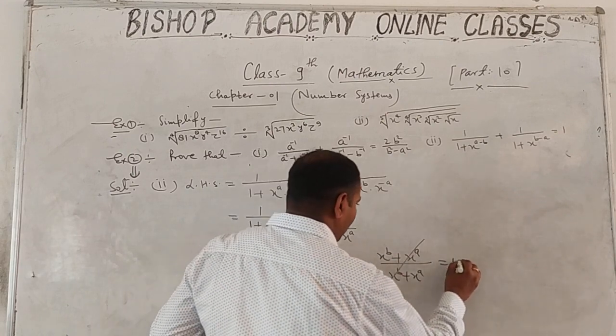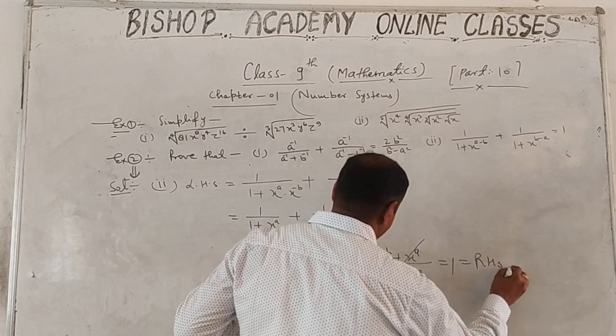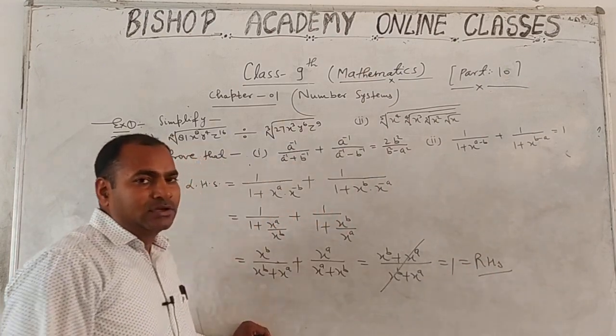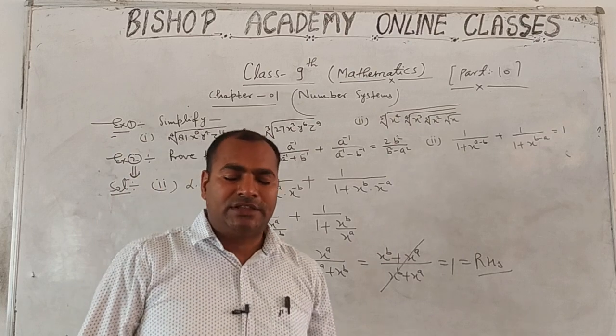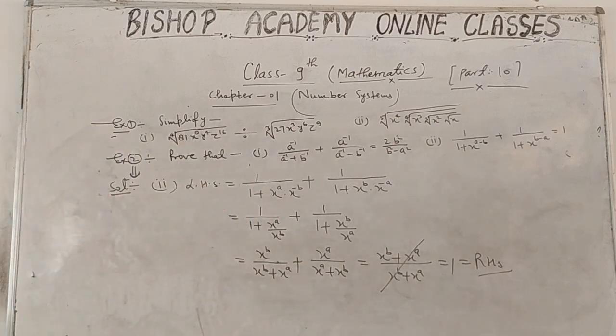This totally cancels to give value 1, which equals the right-hand side. Hence proved. Solve related questions on your own. Thank you.